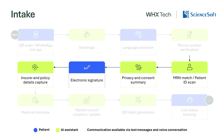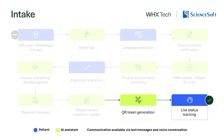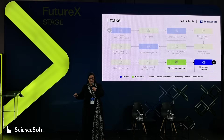After that, the assistant will confirm the patient's insurance details and update your records with this information in your patient system — or create a new record if he's a new patient. Then it will generate a token number and provide live status tracking so the patient knows when his turn is coming up.